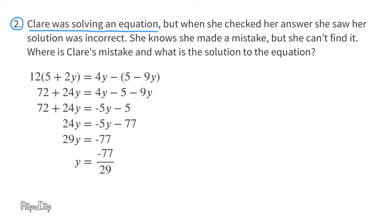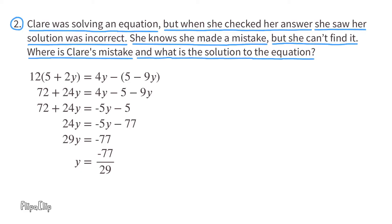Number 2. Claire was solving an equation, but when she checked her answer, she saw her solution was incorrect. She knows she made a mistake but can't find it. Where is Claire's mistake, and what is the solution? Using the distributive property: Claire wrote 12 times 5 was 72, but 12 times 5 is 60 — that's one mistake. On the right-hand side, Claire had a negative times a negative but wrote the answer as negative; a negative times a negative is positive — that's the second mistake. Let's fix those mistakes and continue solving.